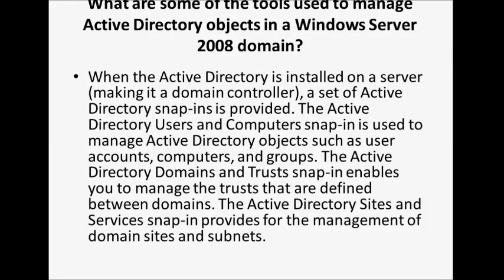What are some of the tools used to manage Active Directory objects in a Windows Server 2008 domain? When Active Directory is installed on a server, making it a domain controller, a set of Active Directory snap-ins is provided. The Active Directory Users and Computers snap-in is used to manage objects such as user accounts, computers, and groups. The Active Directory Domains and Trusts snap-in enables you to manage the trusts defined between domains. The Active Directory Sites and Services snap-in provides management of domain sites and subnets.